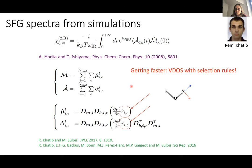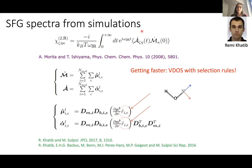Simulations have been used for a long time to interpret experimental SFG spectra. From the simulation point of view, one of the first to work in this field was Morita, who used a suitable correlation function extracted from simulation to calculate the spectra. The Chi-2 response function can be obtained from a correlation function between the time derivative of the polarizability and of the dipole moment, and these quantities can be obtained from an atomistic simulation.